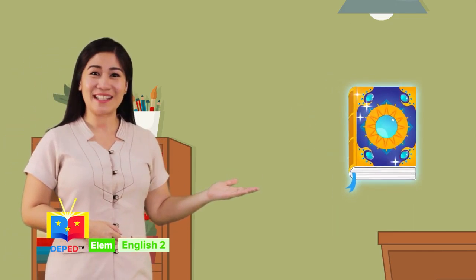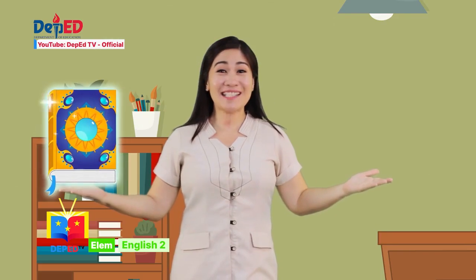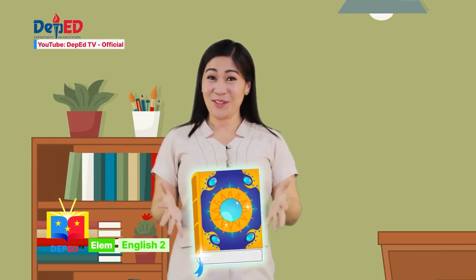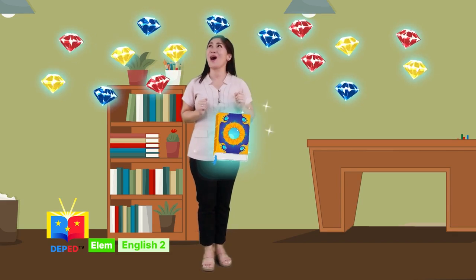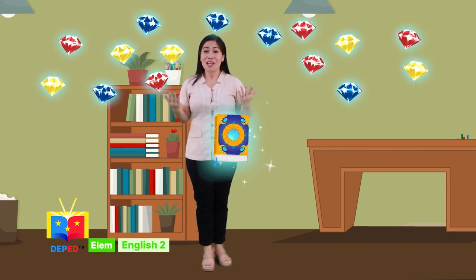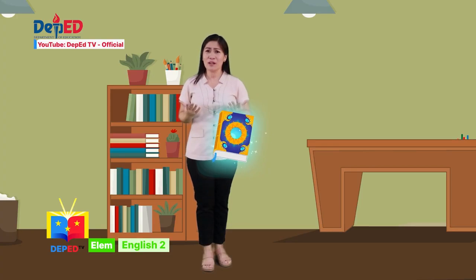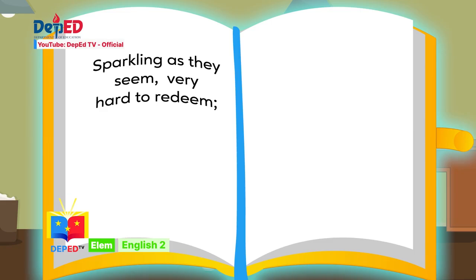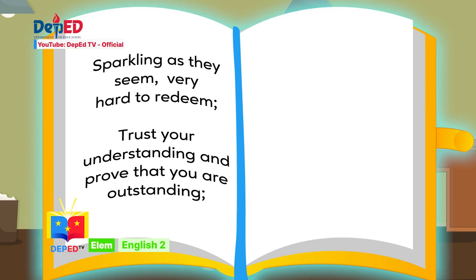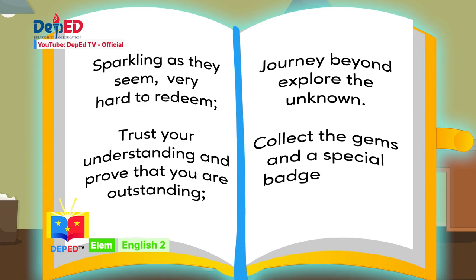Look at our magic book! It is where I discover and look at all the wonders that I put in this little magic book. Look, it is glowing! Wow, look at these gems — they are sparkling! Where did they go? I think the magic book is telling us something: 'Sparkling as they seem but very hard to redeem. Trust your understanding and prove that you are outstanding. Journey beyond and explore the unknown. Collect the gems and a special badge you will own.'